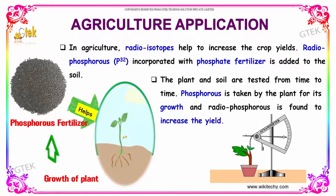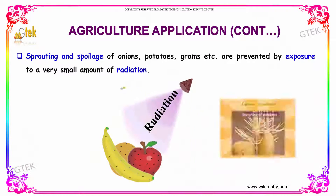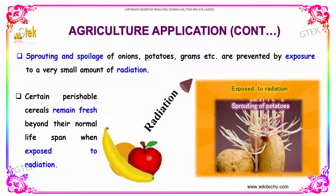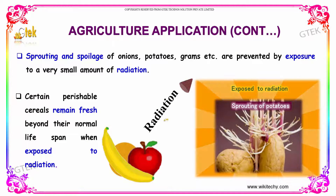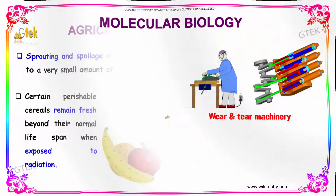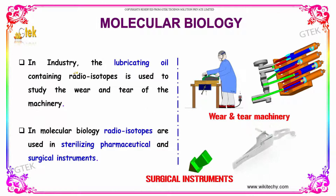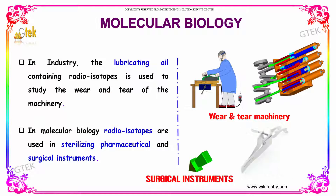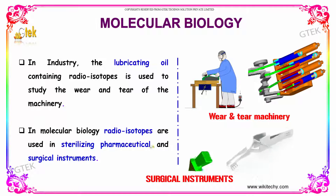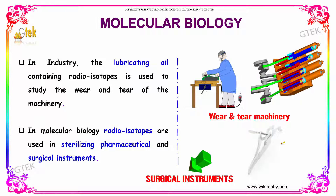Sprouting and spoilage of onions and potatoes are prevented by exposure to a very small dose of radiation. Certain perishable cereals remain fresh beyond their normal lifespan when exposed to radiation. In industry, lubricating oil containing radioisotopes is used to study the wear and tear of machinery. In molecular biology, radioisotopes are used in sterilizing pharmaceutical and surgical instruments.